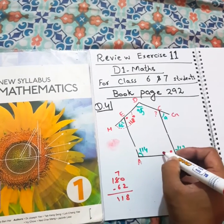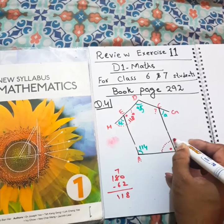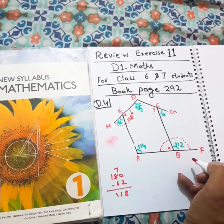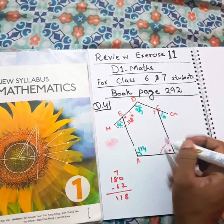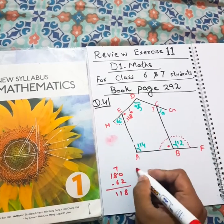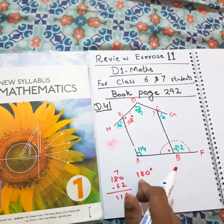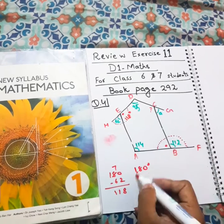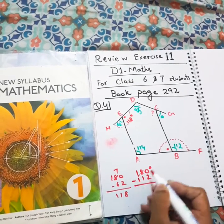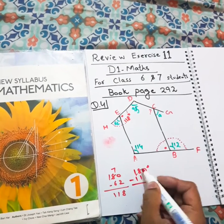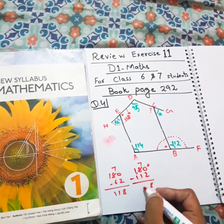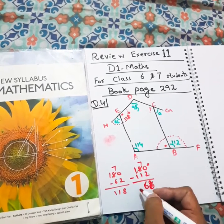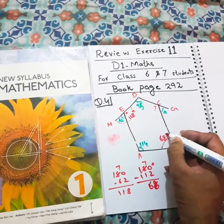Now let's try to find this next angle. We know that here as well this is a semicircle, and from this semicircle we know that the total angle is 180 degrees. From 180 degrees, if we subtract 112 — 10 minus 2 is 8, 7 minus 1 is 6 — so it is 68 degrees here.